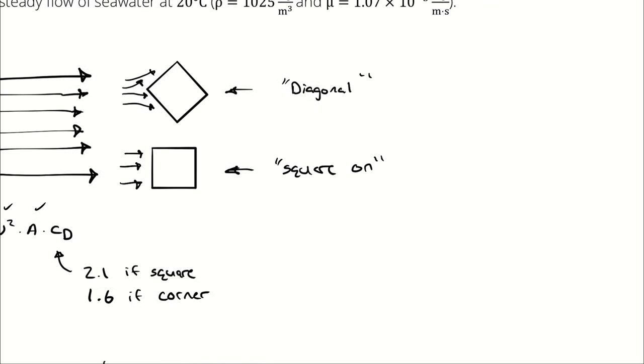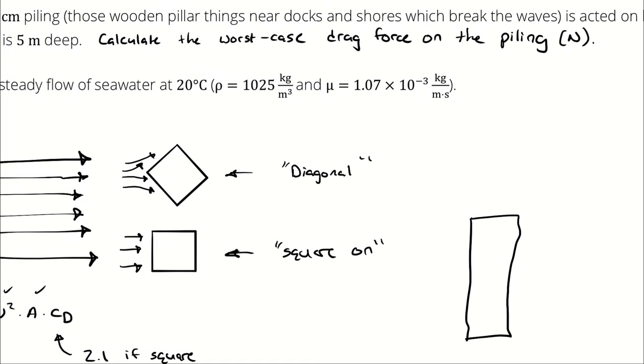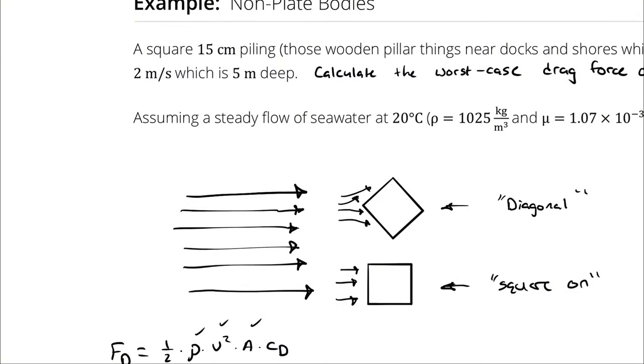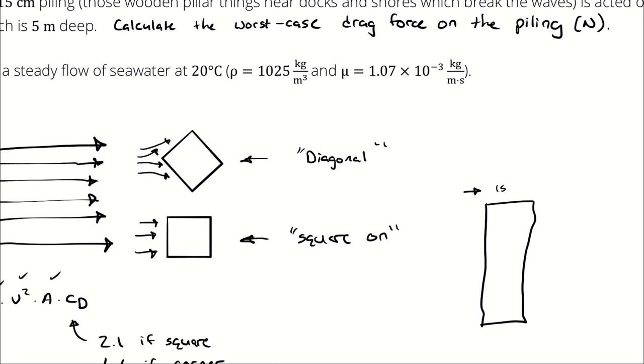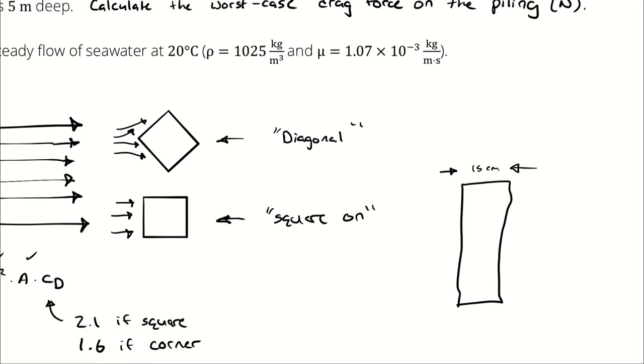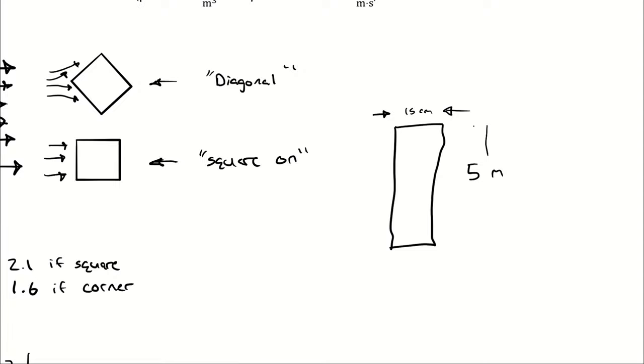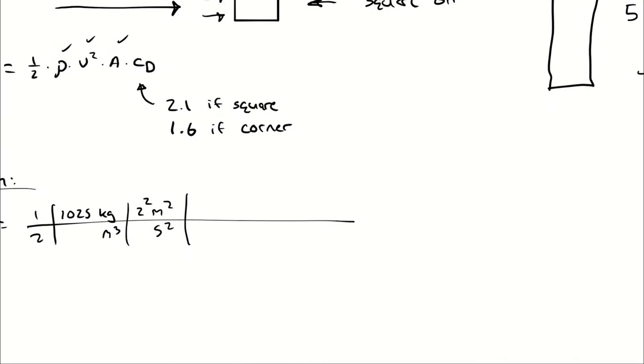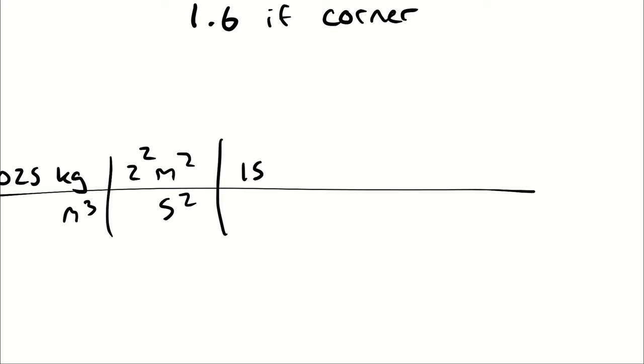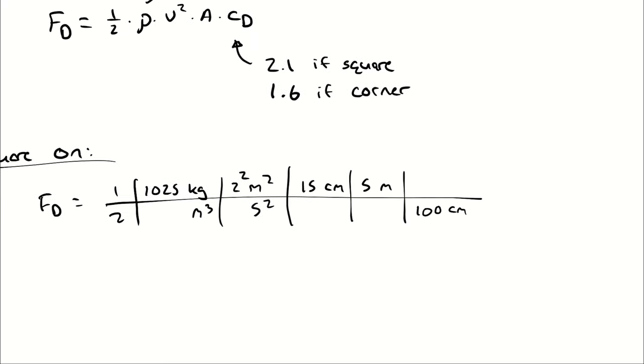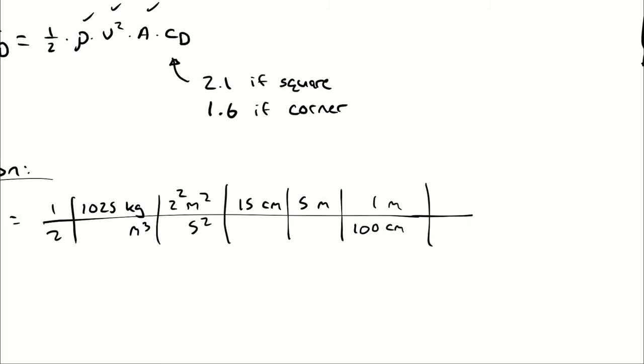Well, keep in mind that from the perspective of the fluid, it's seeing a rectangle that is 15 centimeters across and 5 meters tall. Therefore, my area is 15 centimeters times 5 meters. And I can convert that to meters while we're here. And then I have a coefficient of drag of 2.1.